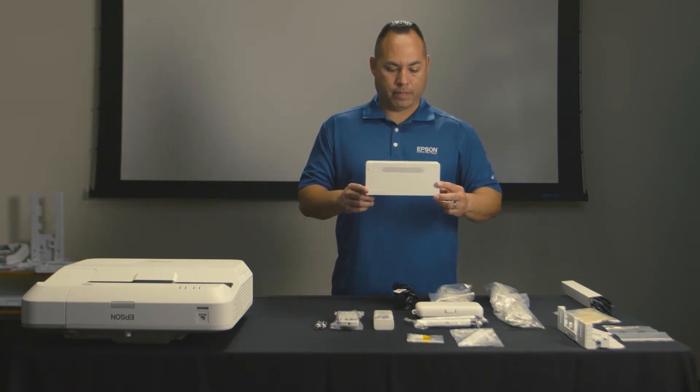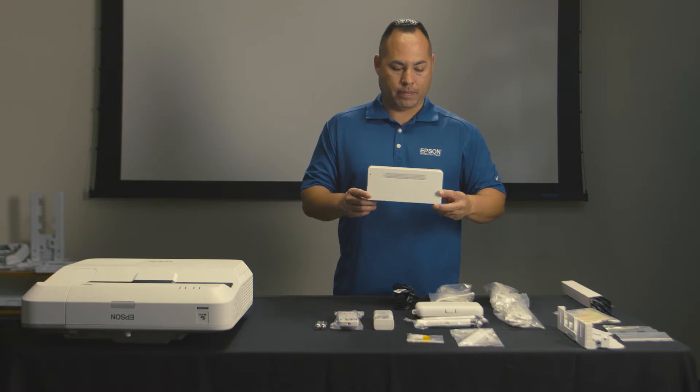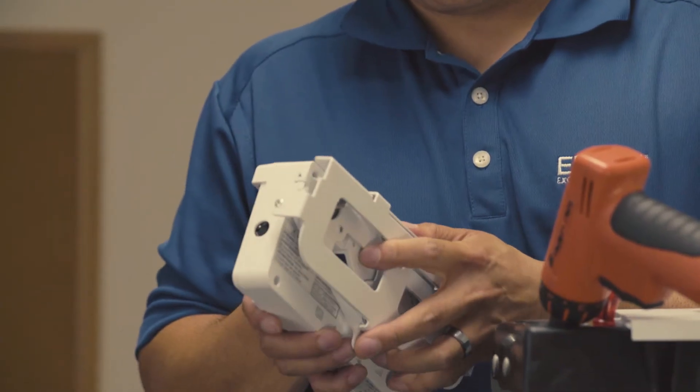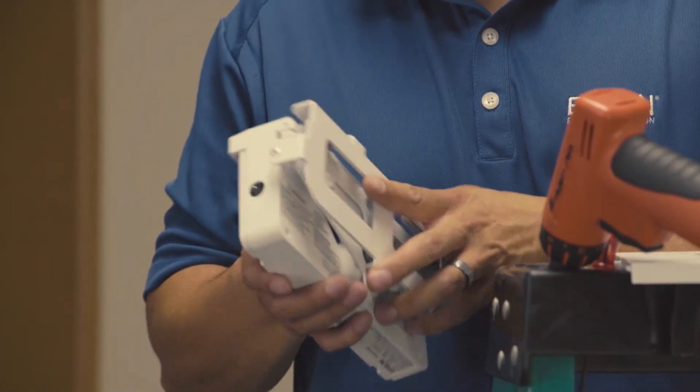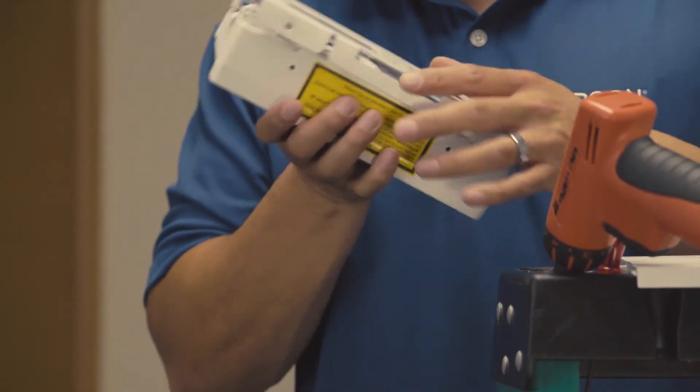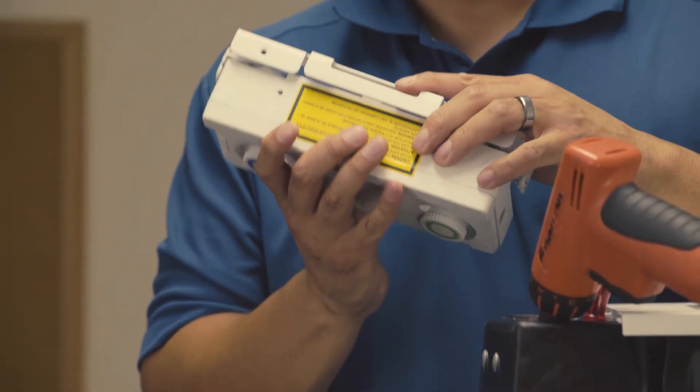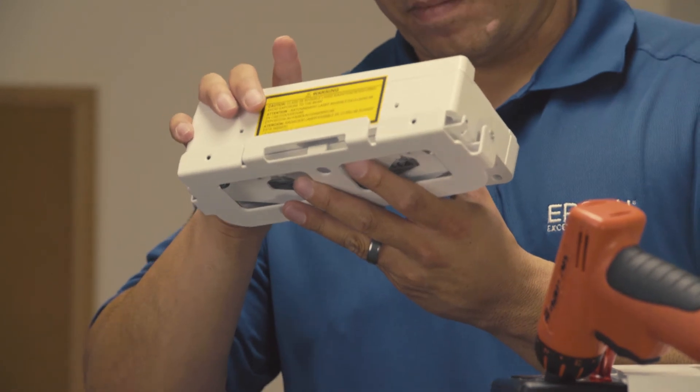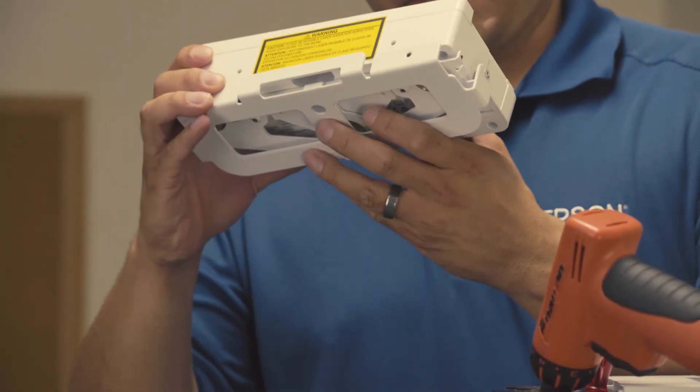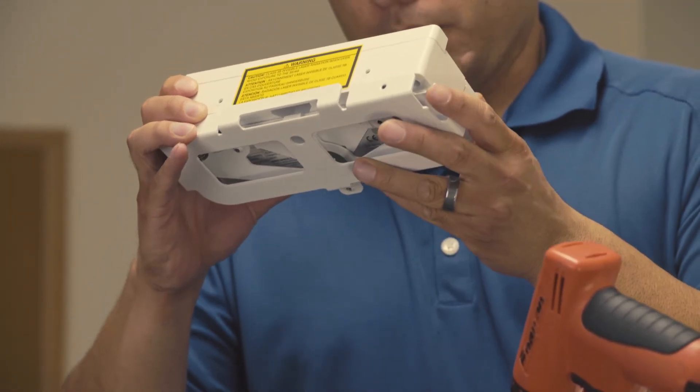Included with the BrightLink projector is a mount for attaching the touch module above the board. If you have determined at the start of the install that you must mount the touch unit on the board, you will not use the touch module mount. For the purpose of our video, we will install the touch unit above the board using the touch module mount.